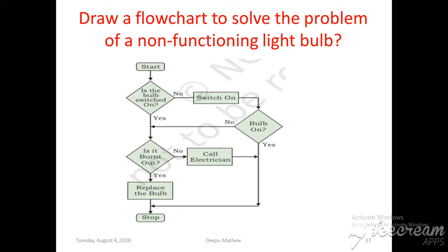If the bulb is not on, we check whether the bulb is burned out. If the bulb is burned out, we replace the bulb and move to stop. If the bulb is not burned out, we call an electrician. After calling the electrician, it also moves to stop. This is the flowchart for solving the non-functioning light bulb problem.